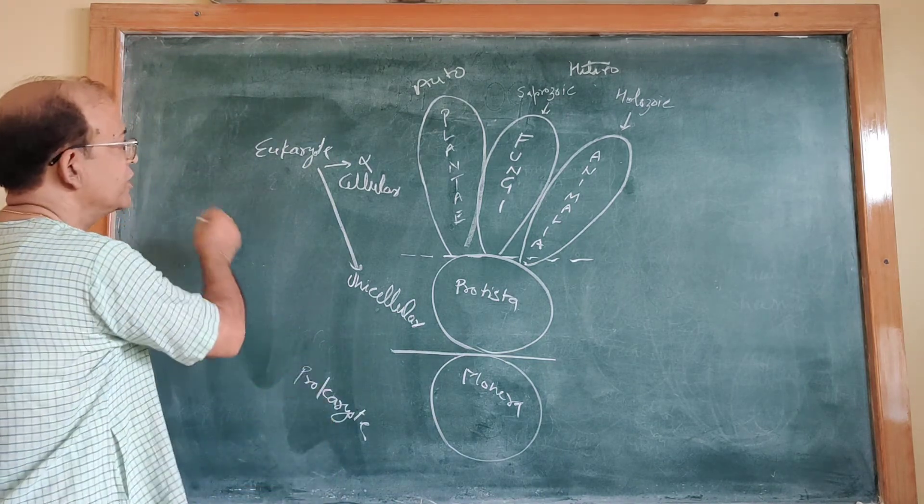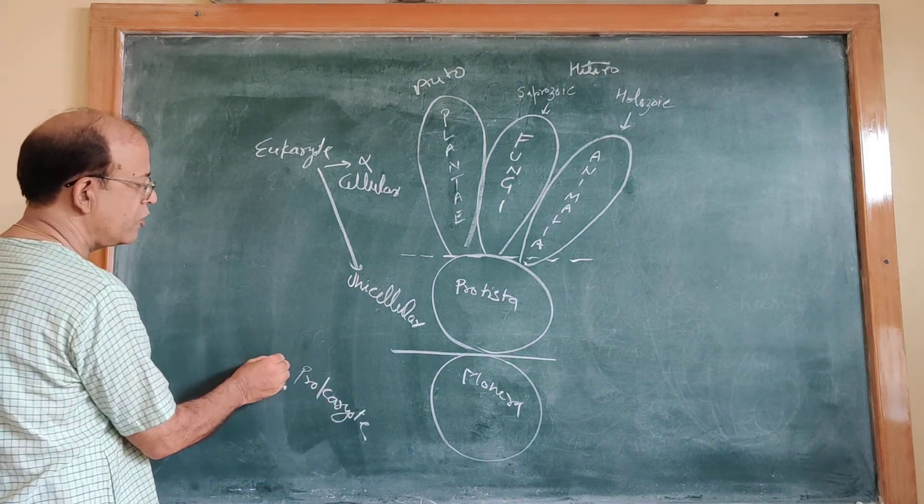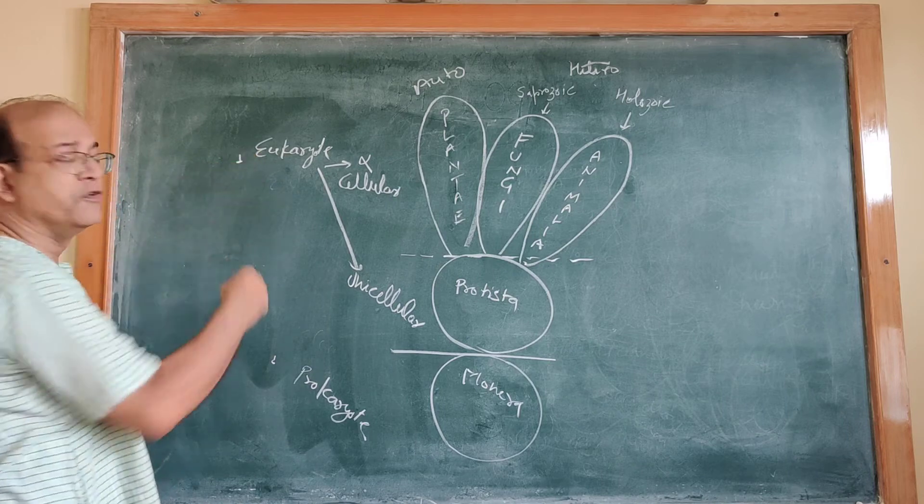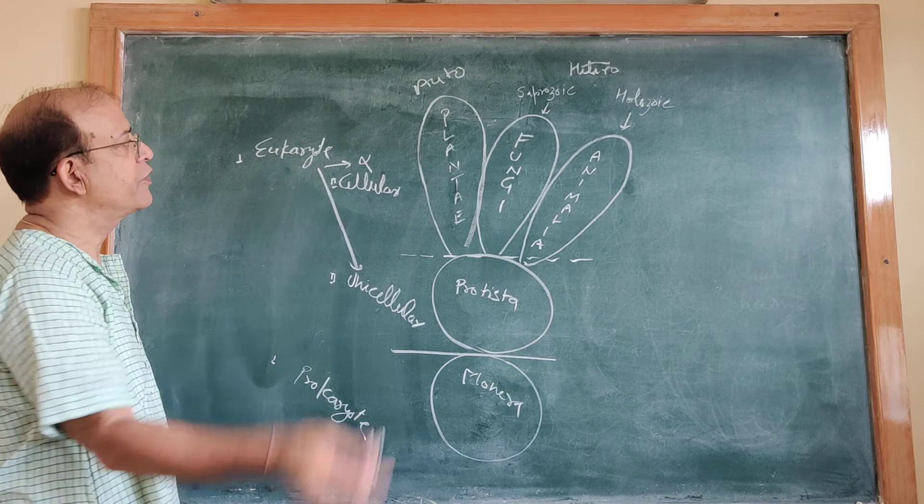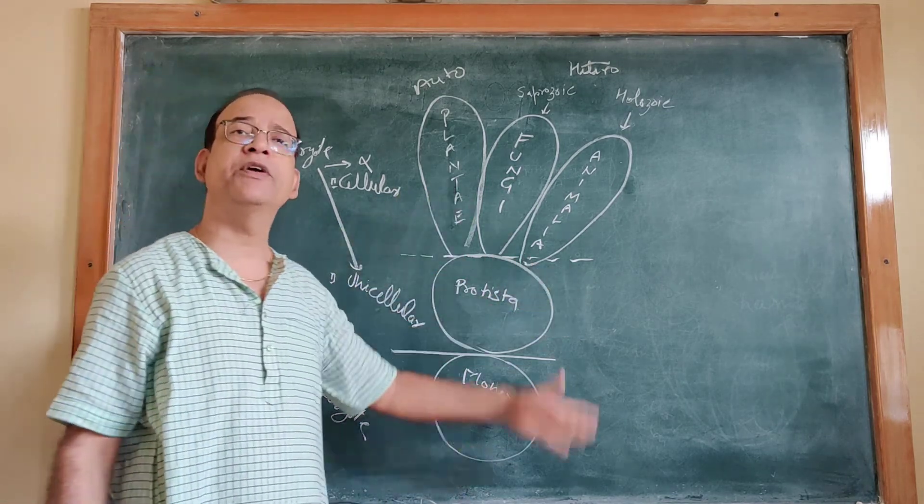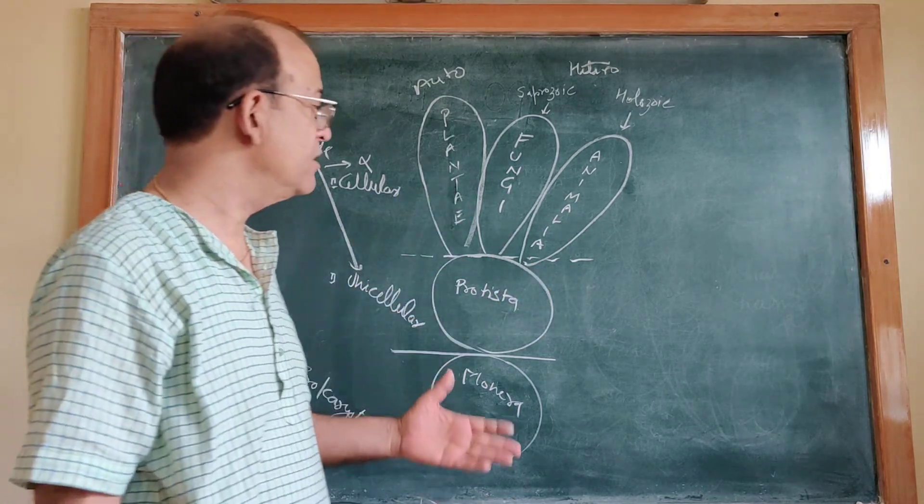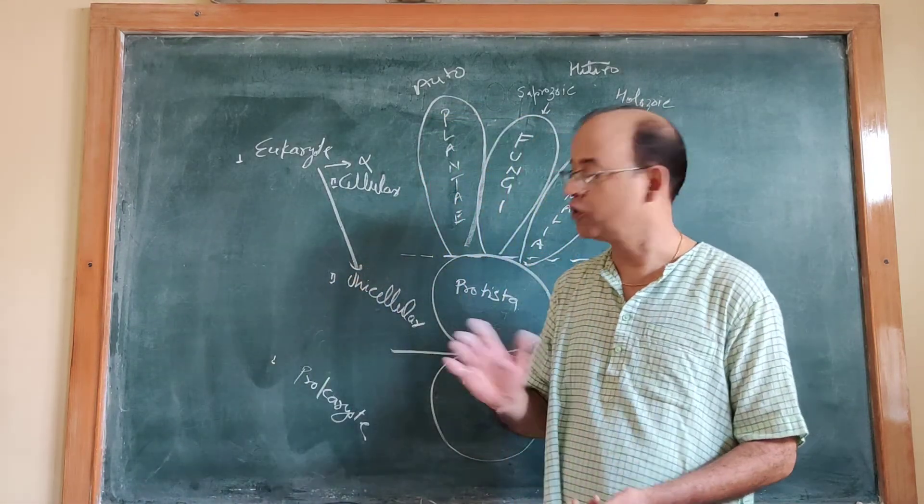So first of all, you have classified as prokaryote or eukaryote. Then you have classified as unicellular or multicellular. Then you have classified on the basis of nutrition. In this way, five kingdoms are grouped.